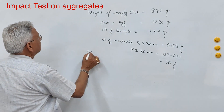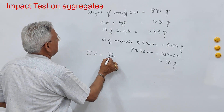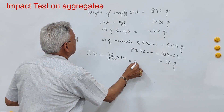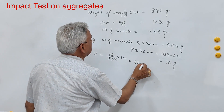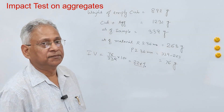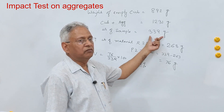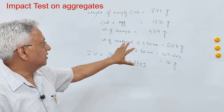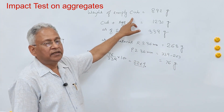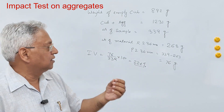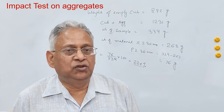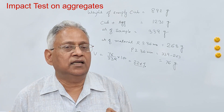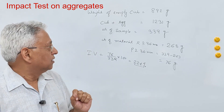The impact value is 76 divided by 339 multiplied by 100, which equals 22.4%. This is for one sample. Now take the same weight again — 339 g — repeat the test. Do it at least three times and then take the average of these three values. That average is your aggregate impact value.